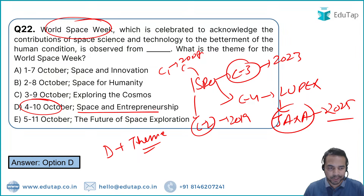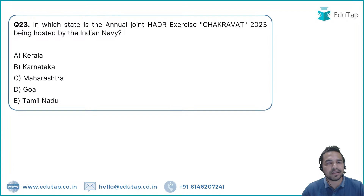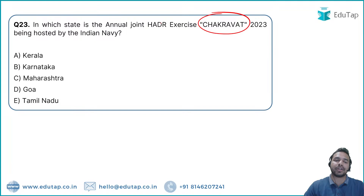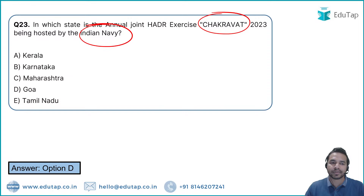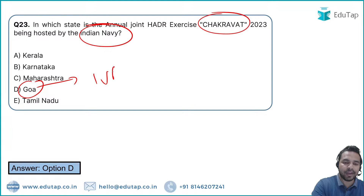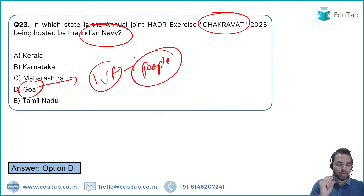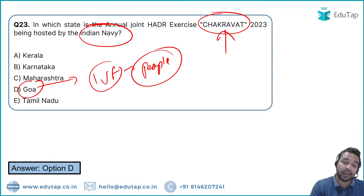Question 24 is on the Chakravat joint exercise, which will be conducted in Goa. Goa is also the state that will provide IVF facility free of cost to people.